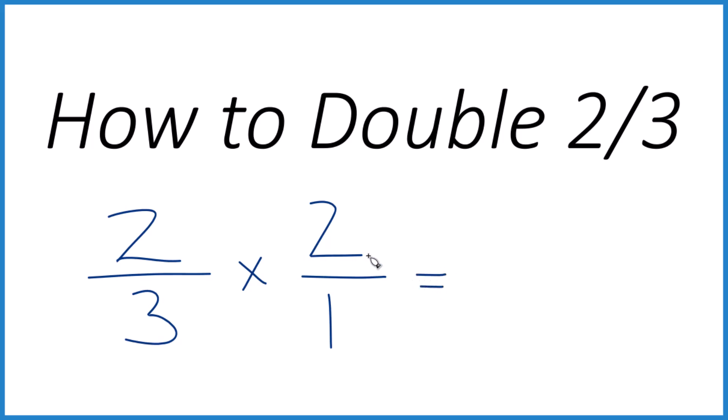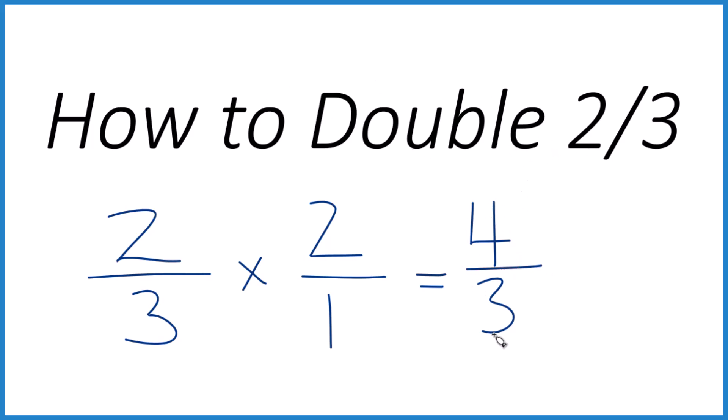2 times 2 equals 4, and 3 times 1 is 3. So when we double 2 thirds, we get 4 thirds.